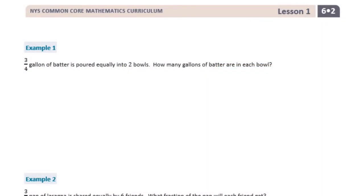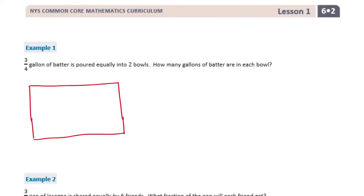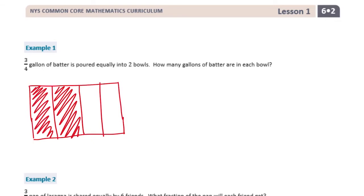6th grade module 2 lesson 1 classwork, example 1: 3/4 gallon of batter is poured equally into two bowls. How many gallons of batter are in each bowl? I'm going to draw 3/4, separate this into fourths, and shade in 3/4: 1/4, 2/4, 3/4.